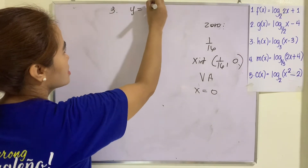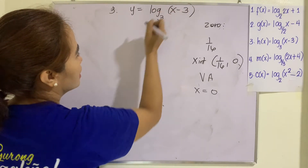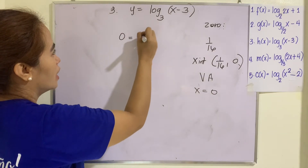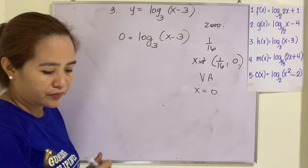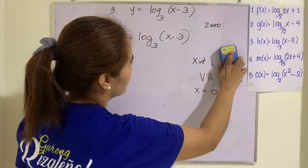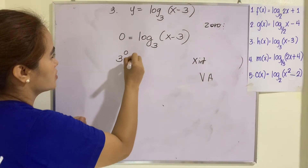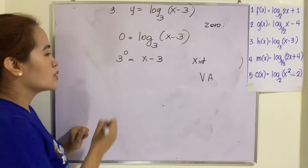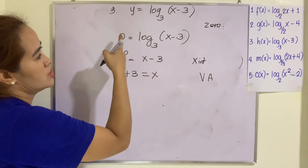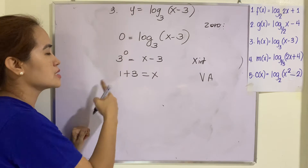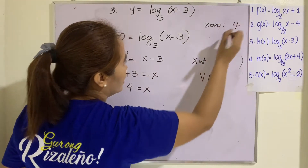Number 3: y equals log of (x minus 3) to the base 3. Setting y to zero: 0 equals log of (x minus 3) to the base 3. Changing to exponential: 3 raised to 0 equals x minus 3, so 1 equals x minus 3, giving x equals 4. So the zero is 4.